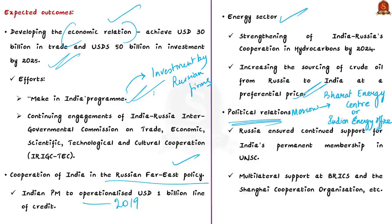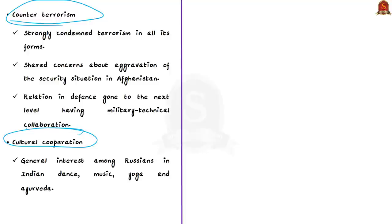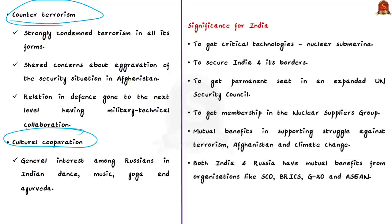India and Russia are engaged in several multilateral efforts, including BRICS and the Shanghai Cooperation Organization. These are the expected outcomes in counter-terrorism and cultural cooperation. Now, why is this partnership important for India? First, it is important for India to obtain critical technologies such as nuclear submarines from Russia. Second, it is important for India to secure itself and its borders, particularly given the emerging partnership between Russia and China at a time when India-China relations are declining.